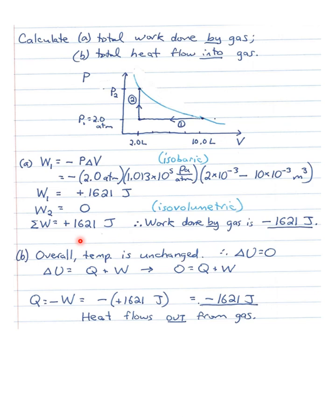The other question: what is the total heat flow into the gas? We recognize that overall, temperature is unchanged — the entire process returns to the original temperature. So ΔU = 0 for the entire process. By the first law: 0 = Q + W, so Q = −W = −1,621 joules. Heat flows out from the gas because Q is negative. The answer to the question — how much heat flows into the gas — is −1,621 joules.